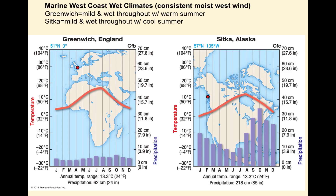Looking at marine west coast wet climates where there is a consistent and moist west wind — Greenwich, England is mild and wet throughout with a warm summer. There's a reduced temperature range compared to more continental mid-latitude zones because the ocean doesn't change its temperature much over the year. They have consistent rains, though not nearly as much as Sitka, Alaska, which is another west coast wet climate.